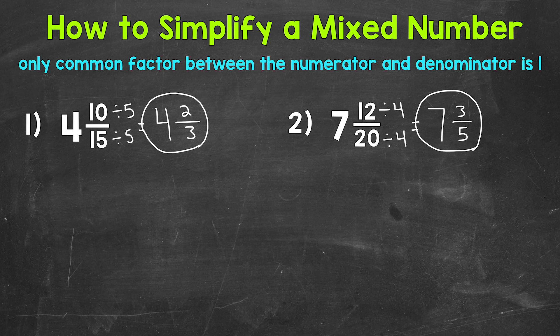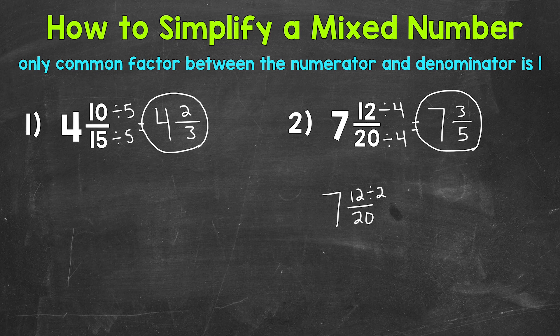Now, for number 2, there is more than one path that we can take to get to simplest form. So let's do this again, but using a different common factor. So 4 is the greatest common factor between 12 and 20. So we were able to simplify in one step. But maybe you are thinking that 2 is a common factor between 12 and 20. They are both even, which is correct.